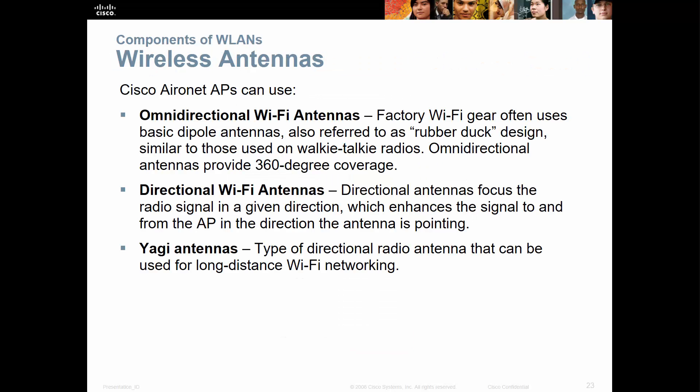There are three main antenna types: omnidirectional, which radiates in all directions like a sphere or bubble; directional, which points in a single direction; and Yagi, a special type of directional antenna designed to channel more power in one direction for longer distances.